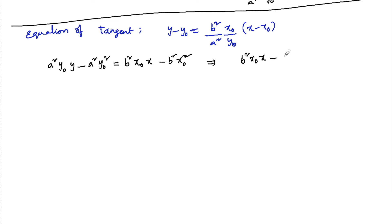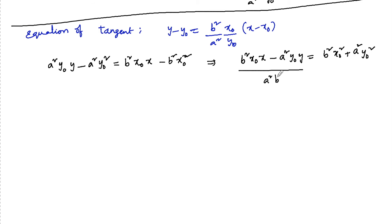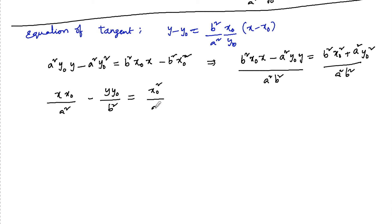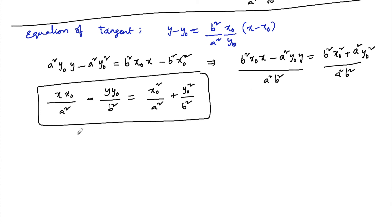We get a² y₀ y = b² x₀² - a² ... plus a² y₀². Dividing both sides by a² b², we have x × x₀ / a² minus y × y₀ / b² = x₀² / a² + y₀² / b². So this is the equation of tangent.